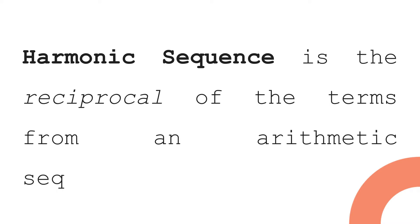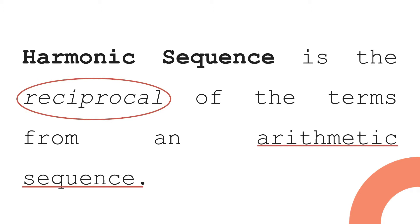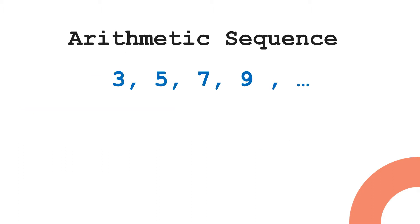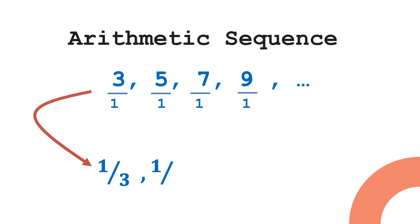Harmonic sequence is the reciprocal of the terms from an arithmetic sequence. So if you have a given arithmetic sequence, you just have to get the reciprocal of each term and you will get the harmonic sequence. For example, given the arithmetic sequence 3, 5, 7, 9, and so on — these whole numbers have 1 as their denominator — flipping each term gives you 1/3, 1/5, 1/7, 1/9, and so on. These terms form the harmonic sequence.